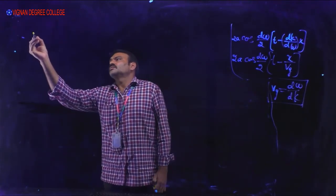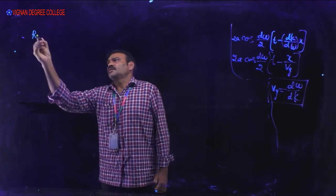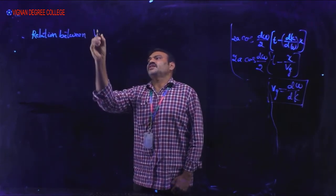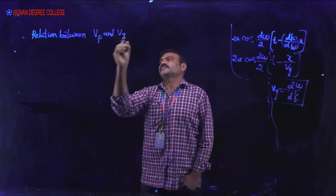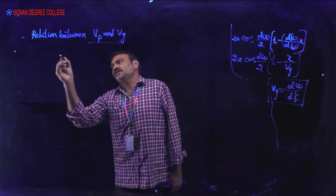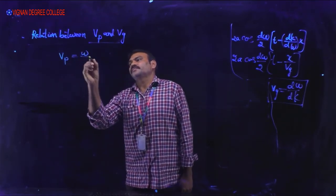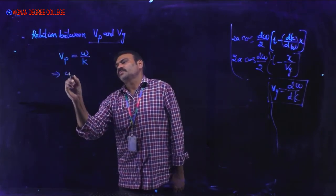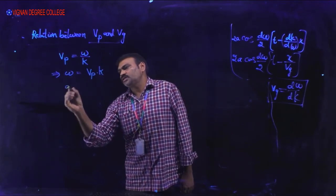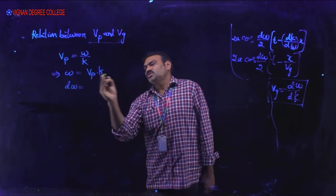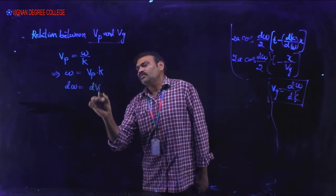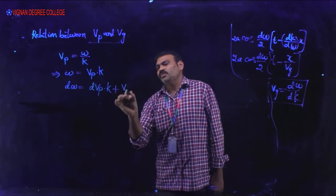Now let us discuss the relation between phase velocity and group velocity. We know phase velocity V_P = ω/k, so omega = V_P · k. Differentiating both sides using the product (uv) formula: dω = k·dV_P + V_P·dk.